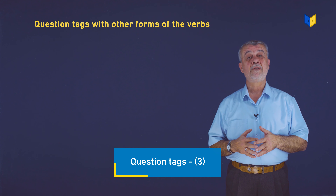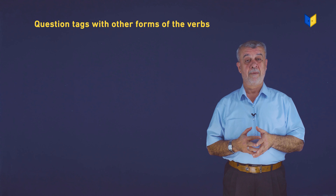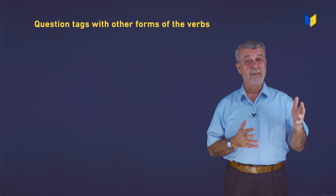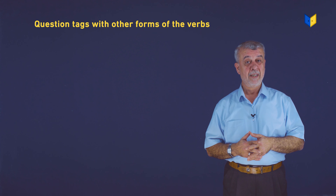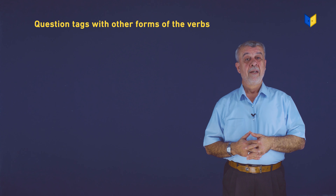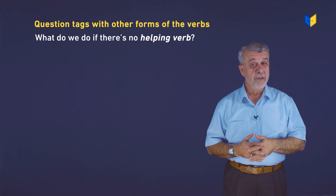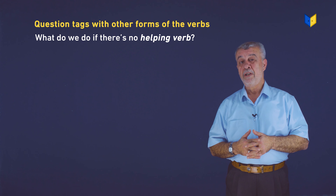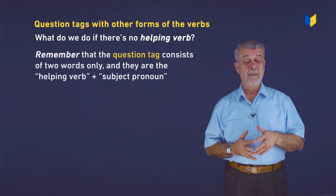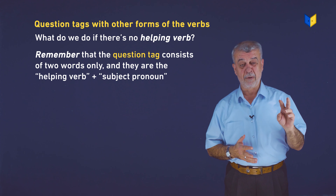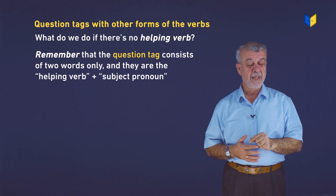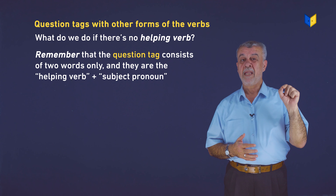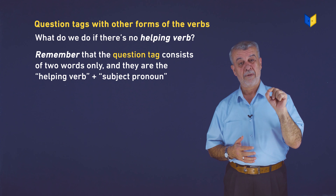Now, dear students, question tags with other forms of the verbs — present and past verbs — not the verb 'to be'. What do we do if there is no helping verb? Remember, question tags have two parts: the first is the helping verb, and the second is the subject pronoun.